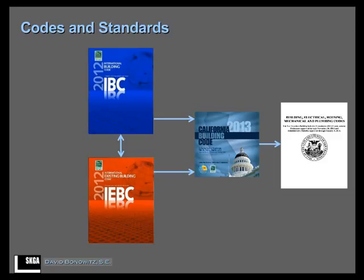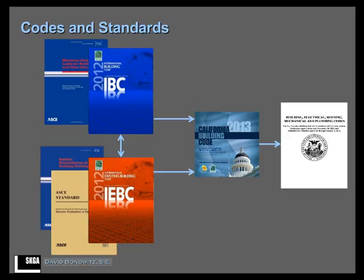Now each of these model codes adopt certain standards. The model codes have evolved so that the IBC in particular is becoming more and more just a holding document — it has administrative provisions, but then there's a bunch of slots that we stick standards into. So when you do design of new buildings, you're familiar with ASCE 7; that is the standard for design of all new buildings and it just gets slotted in to the IBC. The IEBC does something similar for existing buildings. The 2012 version slots in ASCE 31-03 and 41-06. Those are the two that have now been replaced by ASCE 41.13, but of course they're not adopted yet by the IEBC.